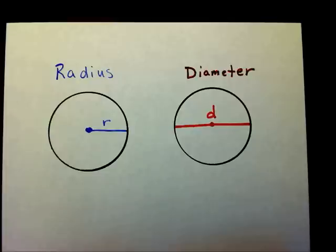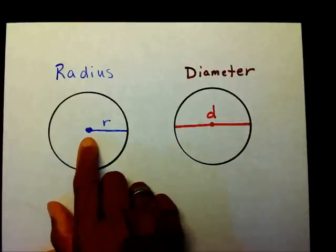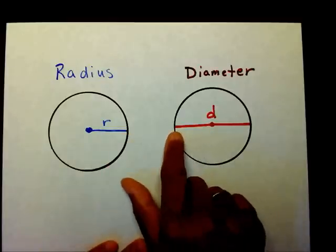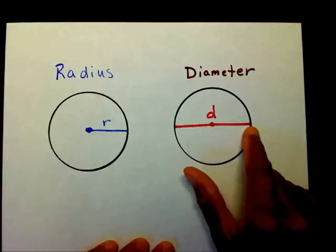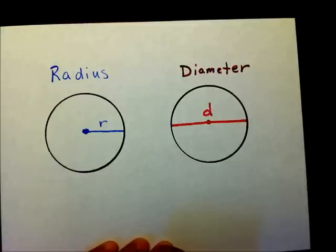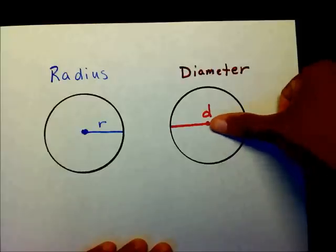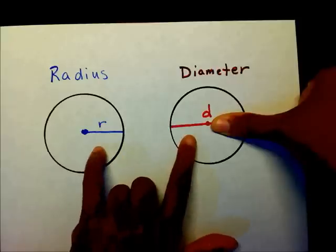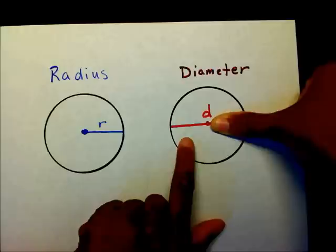Whenever you find the circumference of a circle, they can either give you the radius or the diameter. The radius starts in the center and goes to the circle. The diameter starts at the circle, goes to the center, and then to the other side. If I cover up this section of the diameter, you have the radius. So, therefore, the radius is half of the diameter.